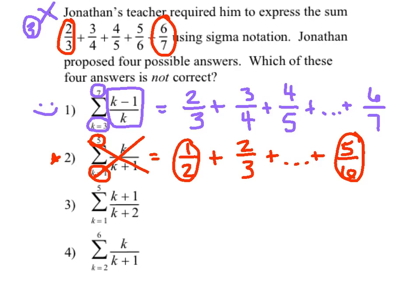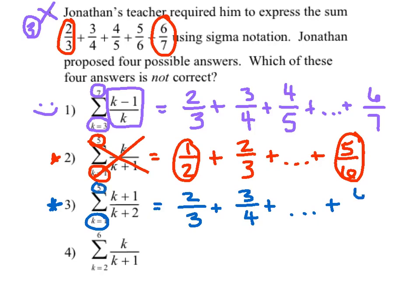Just for fun, let's confirm that the other two do indeed work. For number three, substituting k equals one: one plus one is two, one plus two is three — gives two thirds. Then k equals two gives three fourths. Fast forwarding to the last term: substituting k equals five gives six over seven. From beginning to end, that's a perfect match.